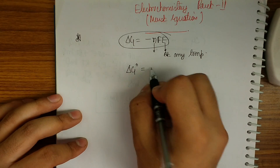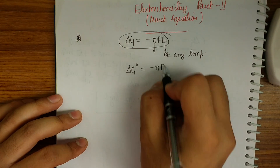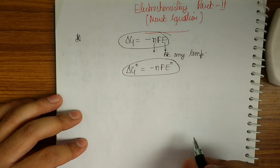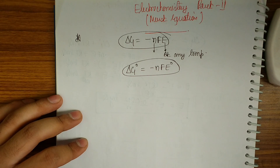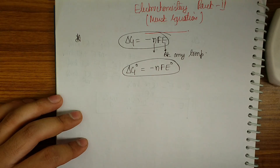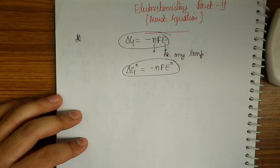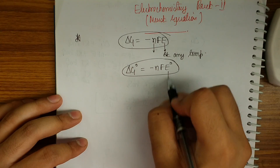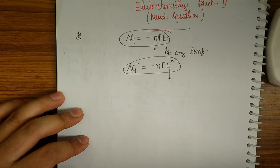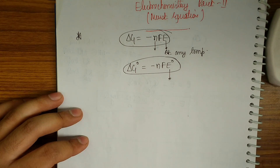If I take ΔG0 equal to minus NFE0, what is ΔG0? It is the Gibbs free energy at standard temperature and pressure — 25 degrees Celsius, one atmosphere and those standard conditions. Similarly, E0 is the potential of the cell at 25 degrees Celsius or 298 Kelvin. This is the basic concept.